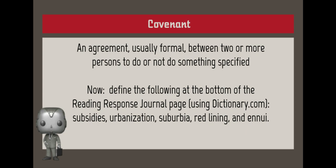Now I'm going to give you about 10 minutes to define the words on the bottom line below the last question on your reading response journal page. You're going to want to use dictionary.com to define them, and the words are subsidies, urbanization, suburbia, redlining, and annuity.